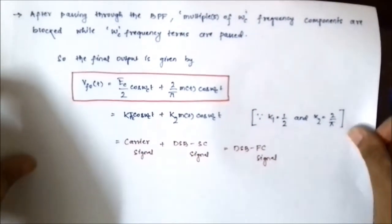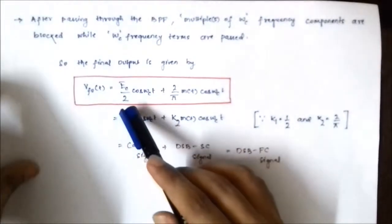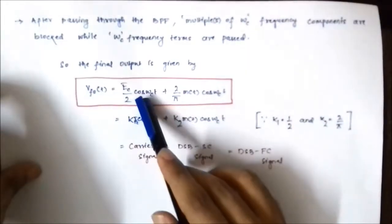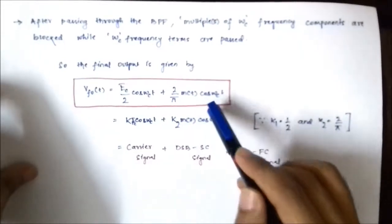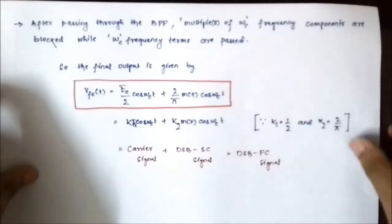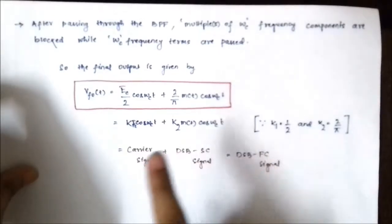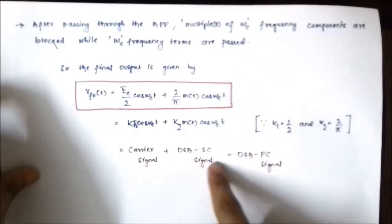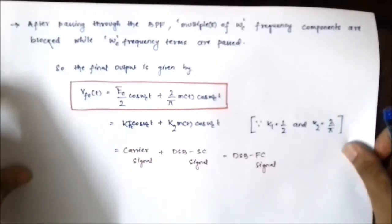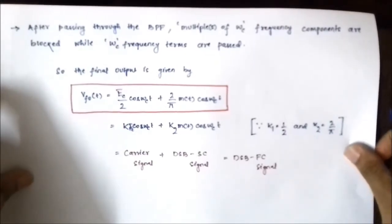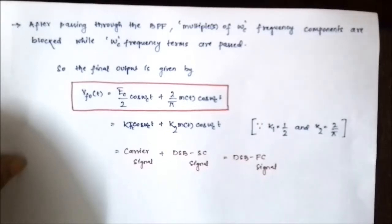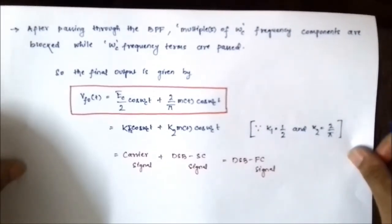The final output is given by EC cos(ωc·t)/2 + (2/π)m(t)cos(ωc·t), which is the carrier signal and the double sideband suppressed carrier signal consisting of the lower and upper sidebands. This is how a double sideband full carrier signal is generated with the help of a switching AM modulator. I hope you liked this video. Please subscribe to the Engineering Tutorials channel for more videos related to electrical, electronics, communication, and instrumentation engineering. Thank you very much.